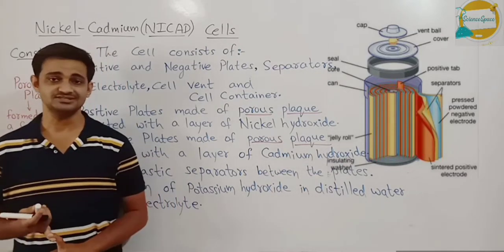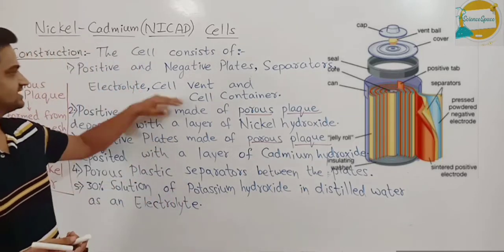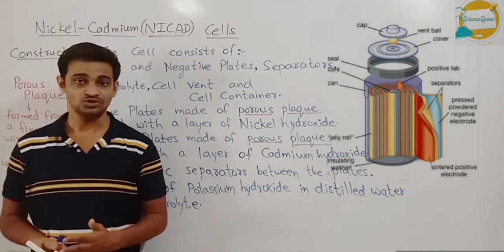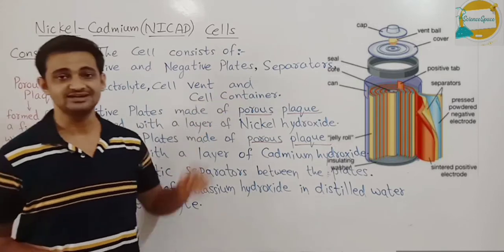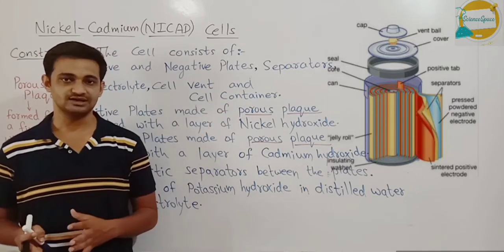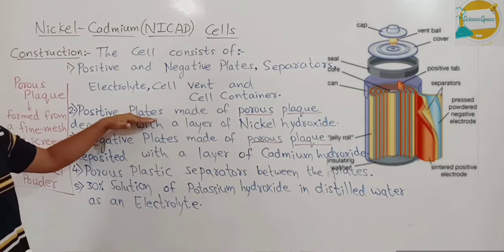The electrolyte is nothing but a solution of KOH, that is potassium hydroxide. Then there is a solvent. The function of the solvent is to radiate heat from the cell and there is a cell container. This cell container is where the complete apparatus is set up.